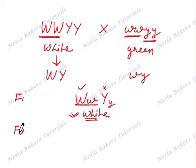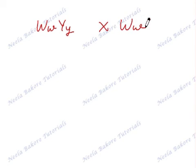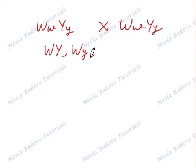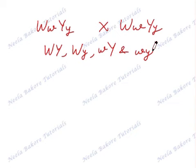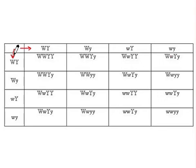In F2, that is the next generation, if two F1 plants are selfed, both are heterozygous and will produce four types of gametes. Both plants will produce the same types of gametes. Now if we plot the Punnett square, we have taken the gametes of one plant on one side and the gametes from the other plant on the other side. Let us see what will be the phenotype of all 16 offspring.